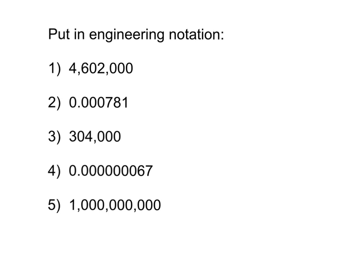For number one, we need to move the decimal place to the left so that we have either one, two, or three digits to the left of the decimal and the exponent is a multiple of three. If I move the decimal three places, I still have four digits in front of the decimal. So I'm going to move it another three places — now I only have one digit in front of the decimal. So it's going to be 4.602 times 10. I moved it six places to the left, so this is a positive exponent, which makes sense because this is a big number — I want to multiply 4.602 times a large number.